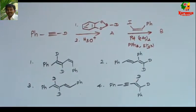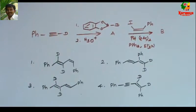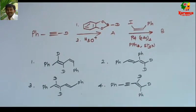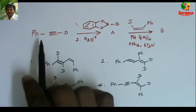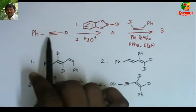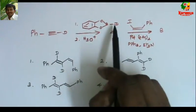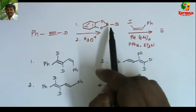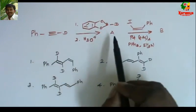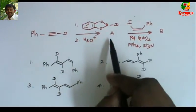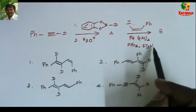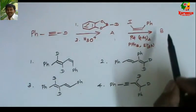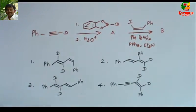Today I am going to solve a problem on Hydroboration and Suzuki Coupling. You can find this problem in CSIR NET exam 2012 June. When this deuterated phenylacetylene is treated with deuterated catechol borane followed by hydrolysis, it results in compound A. When compound A is treated with this vinyl iodide in the presence of palladium, triphenylphosphine, and triethylamine, it results in product B. What is the structure of B?